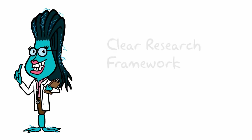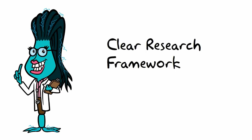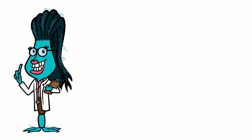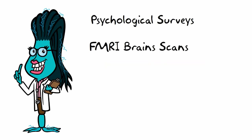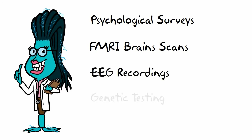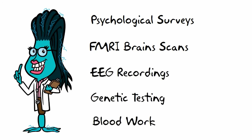For instance, it's going to take a clear research framework to ensure that the information gathered through combinations of psychological surveys, fMRI brain scans, EEG recordings, genetic testing, blood work, and other tools clarifies our understanding of the brain, rather than making things murkier by piling on seemingly unconnected data.